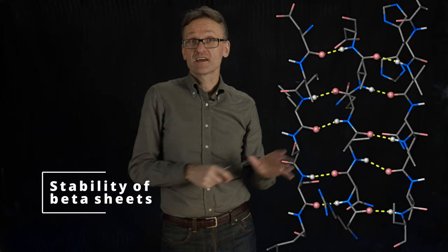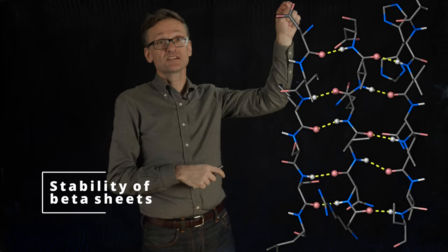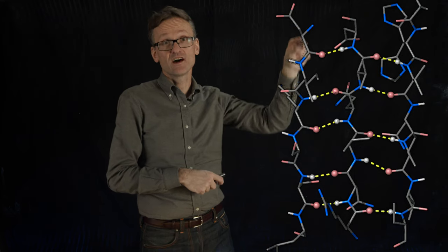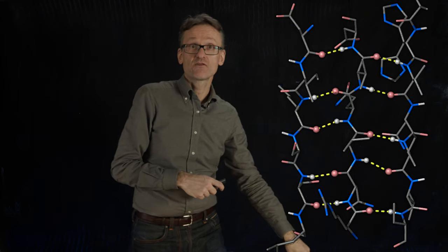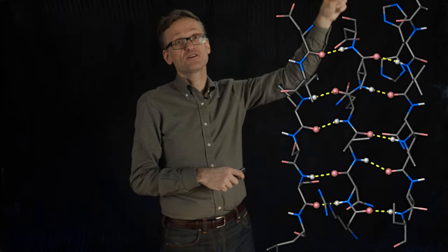So the other secondary structure we're going to look at is this beta sheet. In this case we have the amino acid chain going down here and it might be spiraling around here, and then it goes up here and then it might be spiraling around here and then it goes down here.